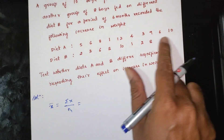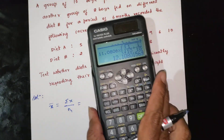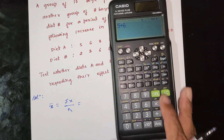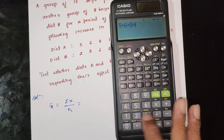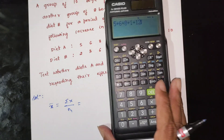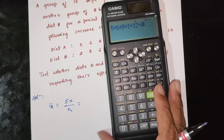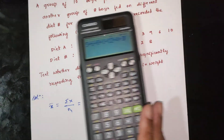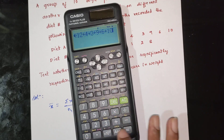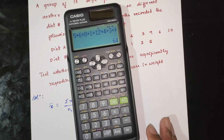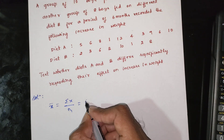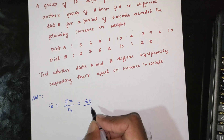For Diet A data: 5 plus 6 plus 8 plus 1 plus 12 plus 4 plus 3 plus 9 plus 6 plus 10. The summation of x equals 64. This is n1.